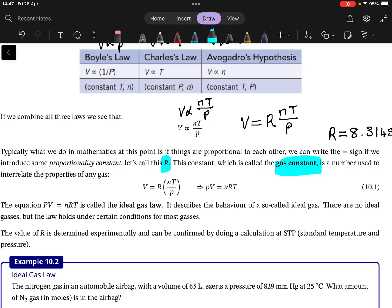So once we try to rewrite this equation, we say the P goes there, we get something called PV is equal to nRT, and that is called the ideal gas law.